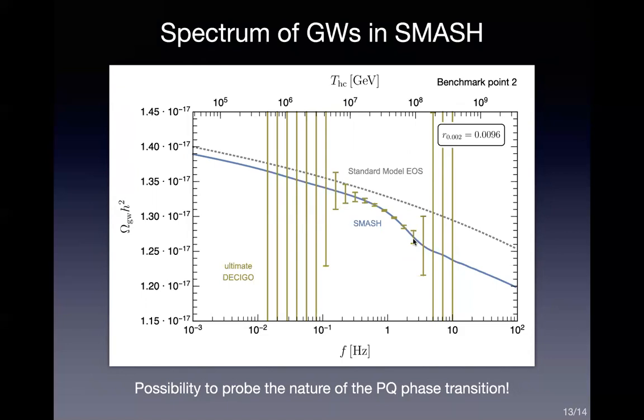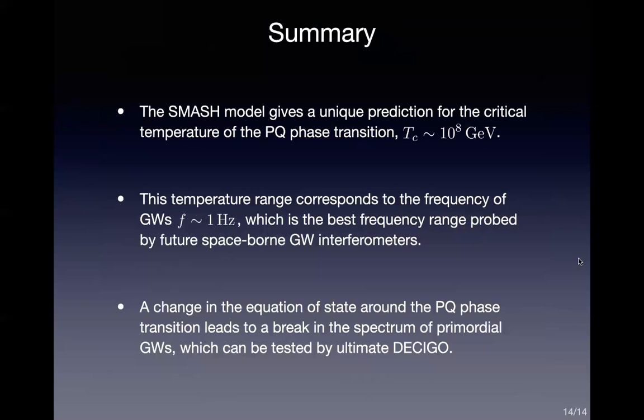To summarize: we pointed out that the SMASH model gives a unique prediction for the critical temperature of the Peccei-Quinn phase transition at 10^8 GeV. This temperature range corresponds to 1 Hz in the frequency of gravitational waves, which is the best frequency range probed by future gravitational wave experiments. A change in the equation of state around the Peccei-Quinn phase transition leads to a break in the gravitational wave spectrum in this frequency range, and this can be tested by future experiments such as ultimate DECIGO. Thank you for your attention.